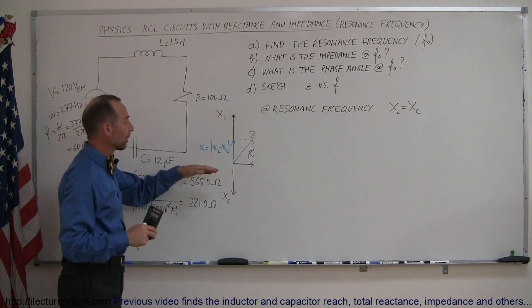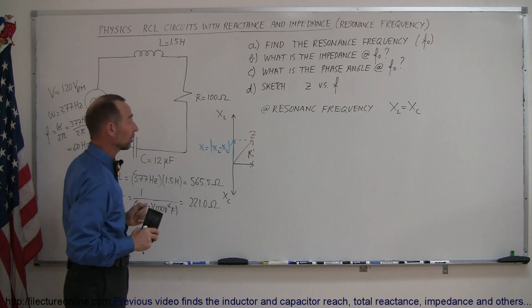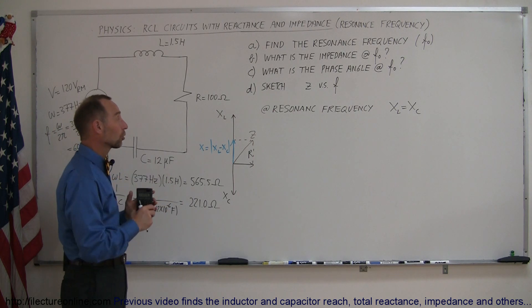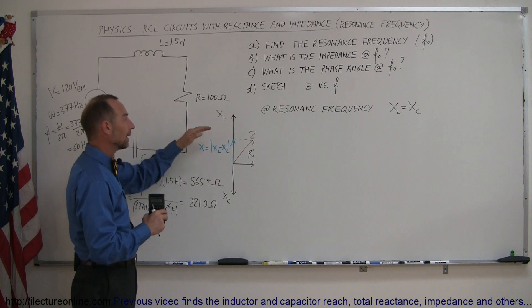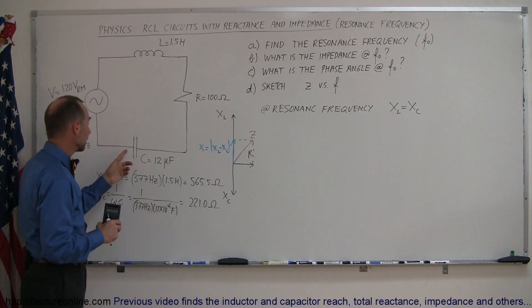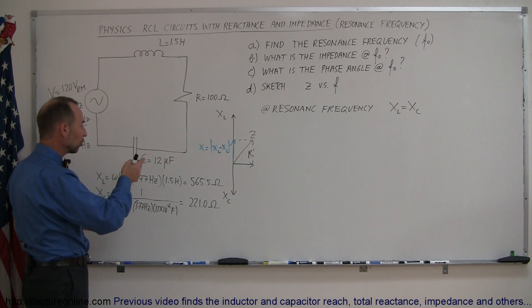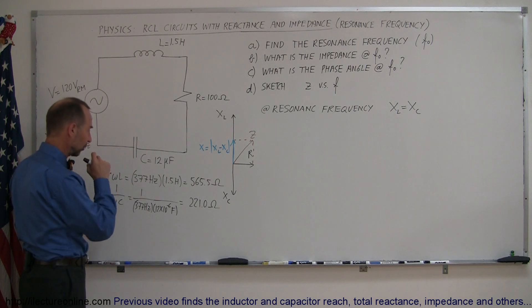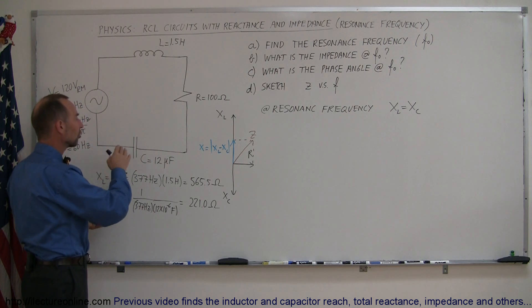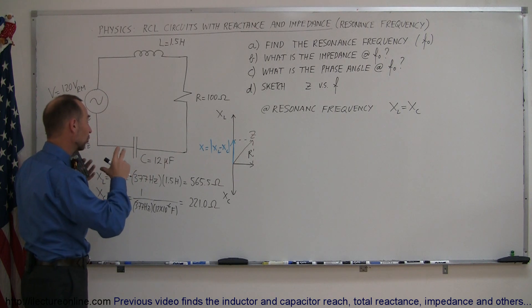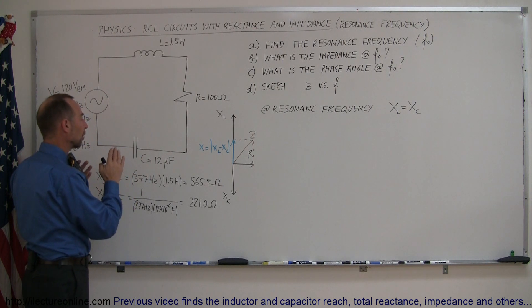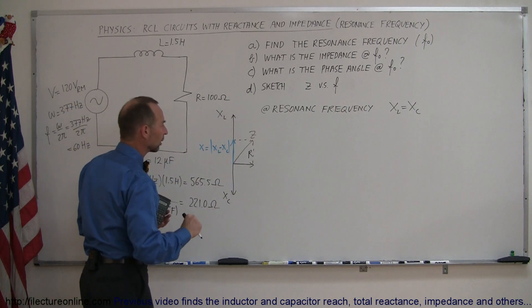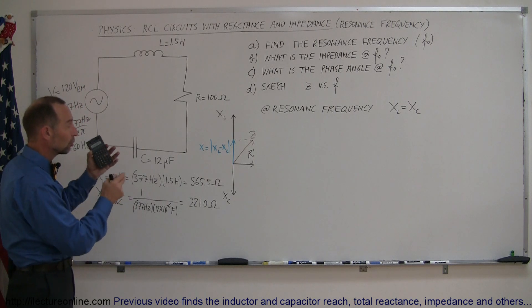Now, how can I get X sub L to become smaller and X sub C to become bigger so that they're equal to each other? Well, since the inductor opposes a change in current, the less frequently the current changes, the less it opposes the current. So if I lower the frequency, then X sub L will become a smaller number. For the capacitor, if the current switches very frequently, then the capacitor doesn't get a chance to fill up, and so there's less reactance with the capacitor. But if the current begins to switch slower, so the capacitor has more time to charge up, then the capacitor will begin to push back with a greater amount of force, and so the X sub C will become larger. So by lowering the frequency, X sub C will become larger and X sub L will become smaller, and we're trying to find out what the frequency is where the two will be equal to each other.